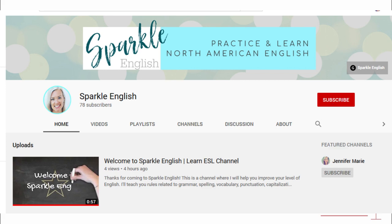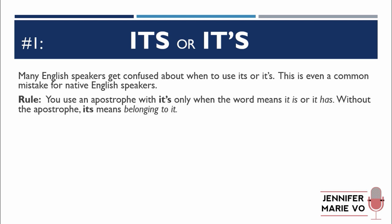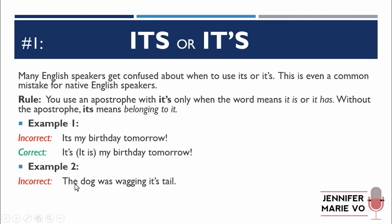Okay, so let's get started. Common mistake number one is "its" or "it's". Many English speakers get confused about when to use its or it's — this is even a common mistake for native English speakers. The rule is: you use an apostrophe with it's only when the word means "it is" or "it has". Without the apostrophe, "its" means belonging to it. So example one, incorrect: "It's my birthday tomorrow" — because this should be "it is," you have to have the apostrophe: it's = it is my birthday tomorrow.